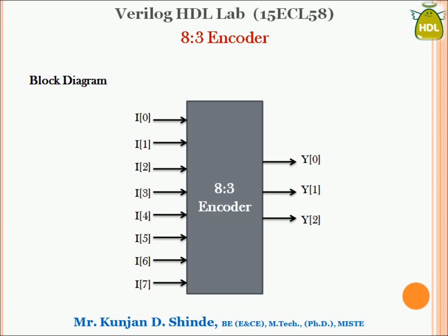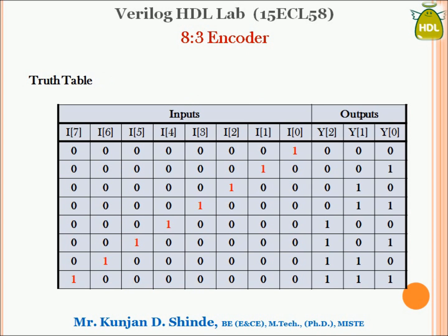The figure shows the block diagram of the 8-to-3 encoder, which has 8 inputs from I0 to I7 and 3 outputs from Y0 to Y2. Now let us look into the truth table of the 8-to-3 encoder. As we know, the inputs are 8 bits wide, starting from I7 to I0, where I7 is the MSB and I0 is the LSB, with outputs Y2, Y1, and Y0.